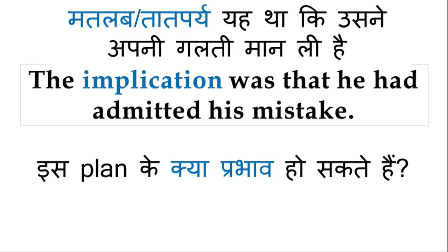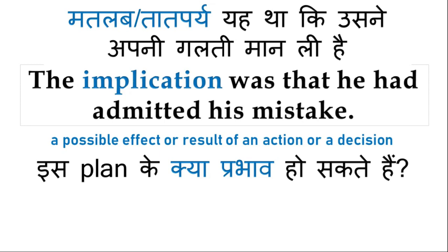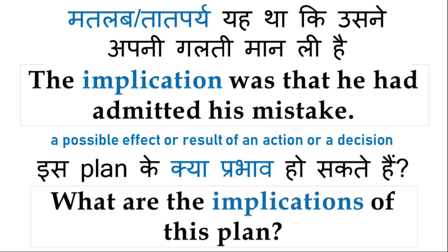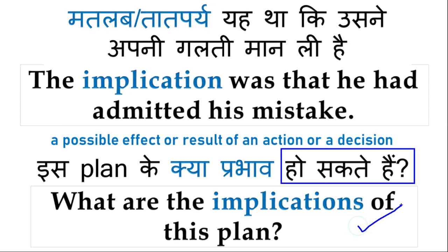Implication का दूसरा मतलब है: किसी decision या action का possible result जो हो सकता है. जैसे: 'What are the implications of this plan?' — इस plan के क्या प्रभाव हो सकते हैं. Implication का मतलब possible effect — यानि possibility इसके अंदर ही आ गई. So implication has two meanings: one is the indirect/hidden meaning, and the other is the possible effect of something.